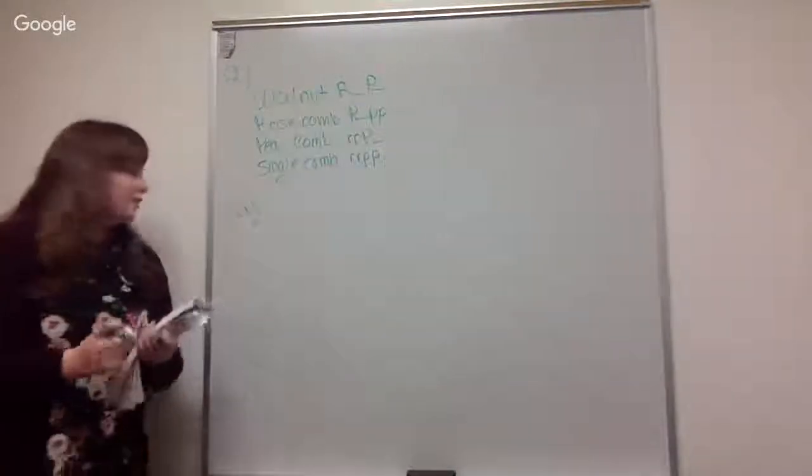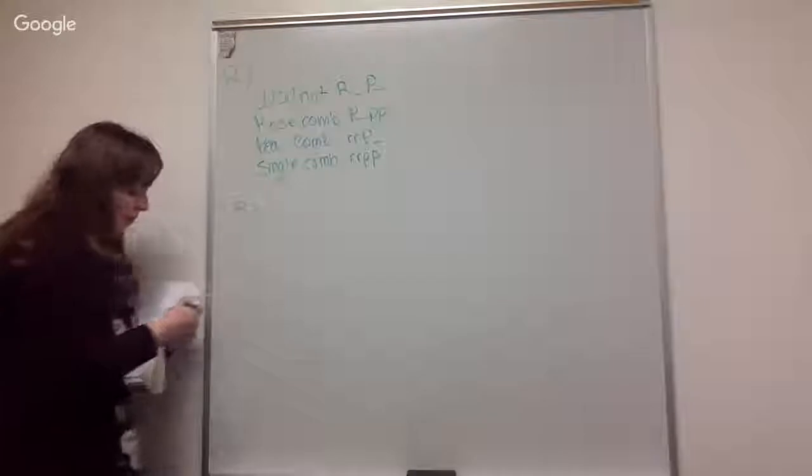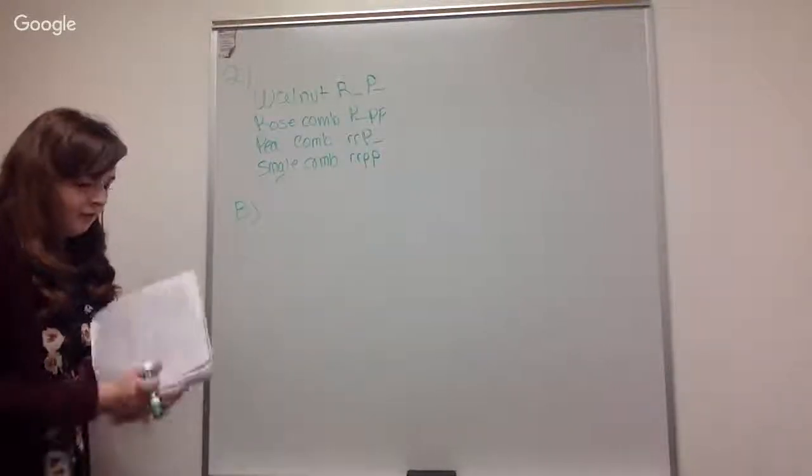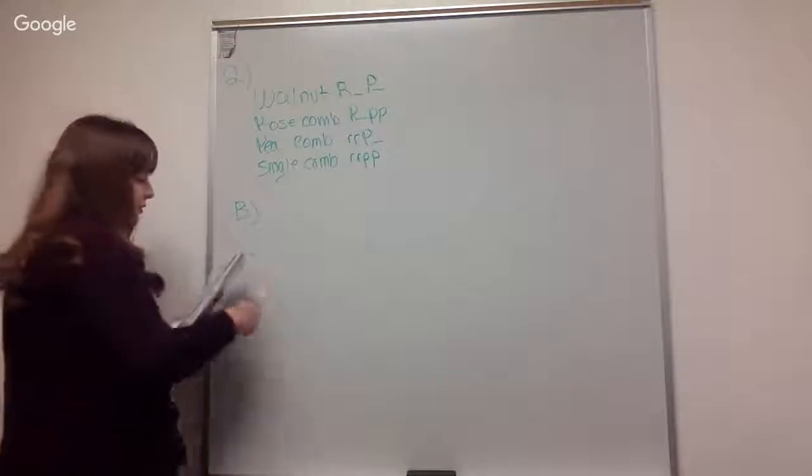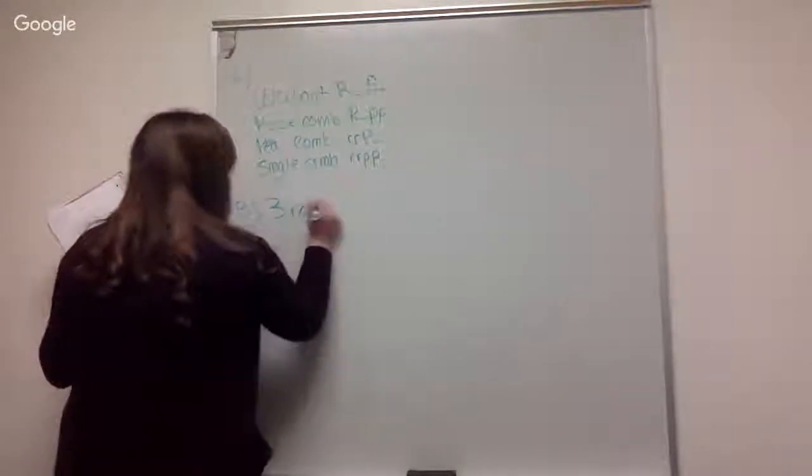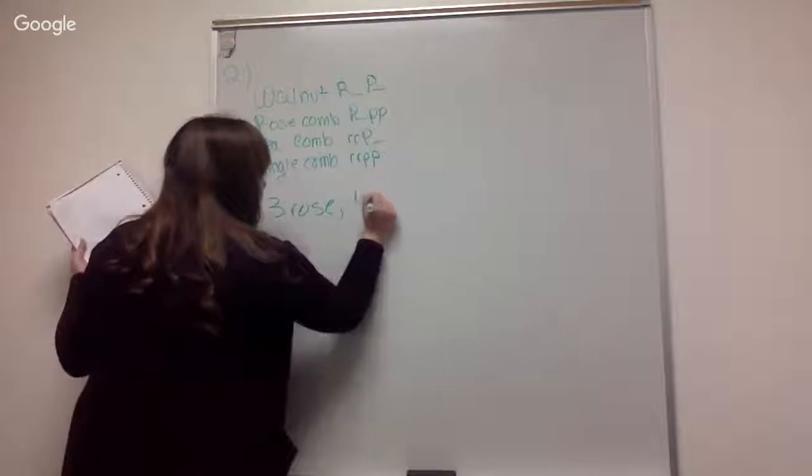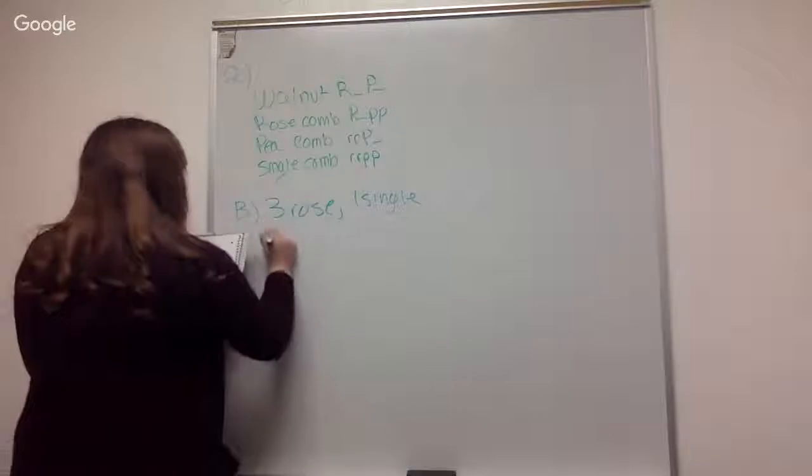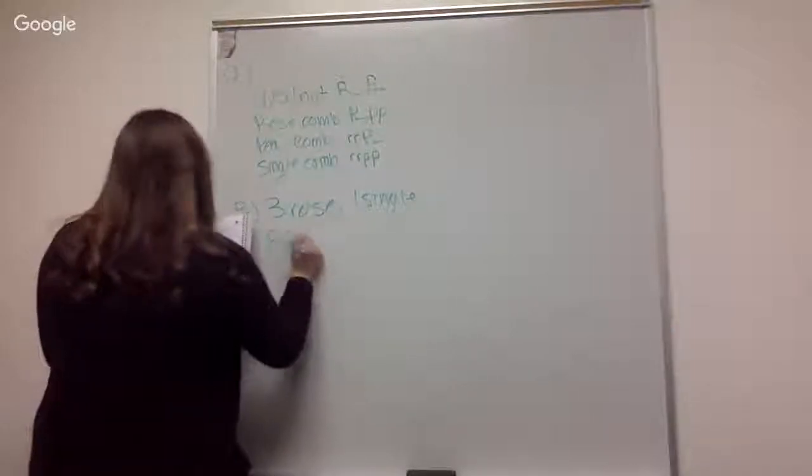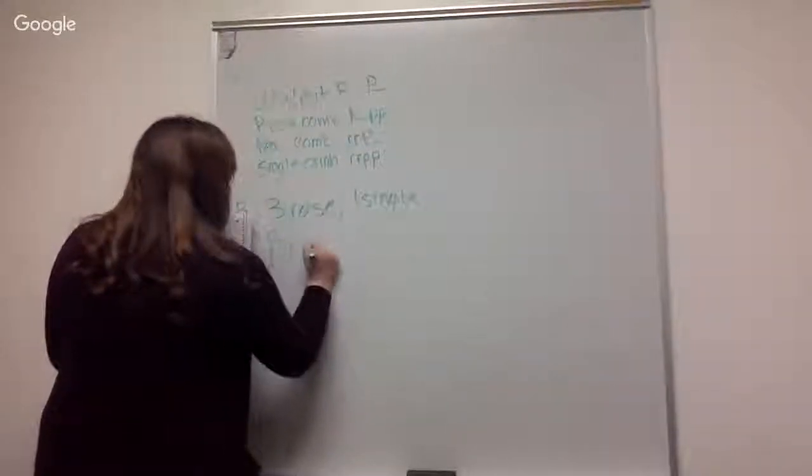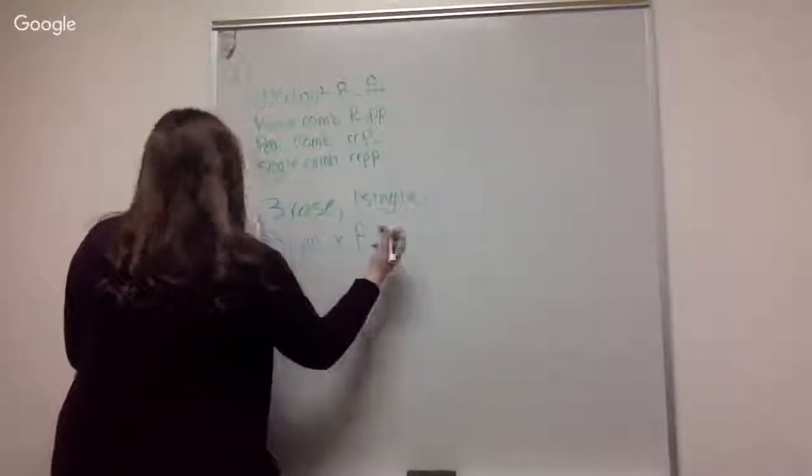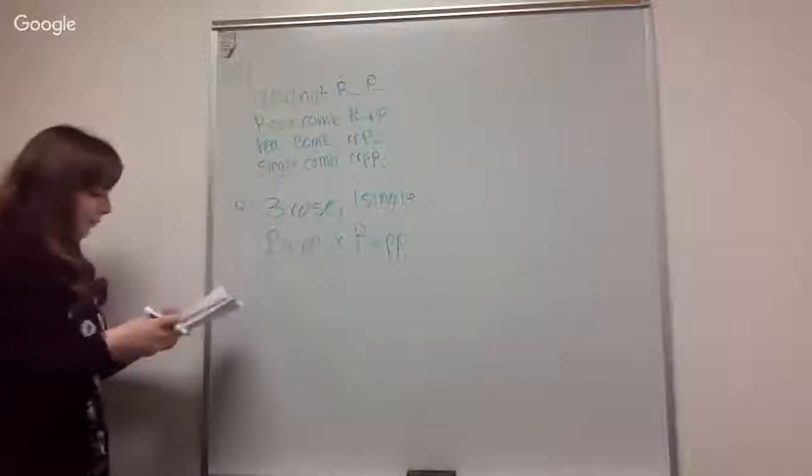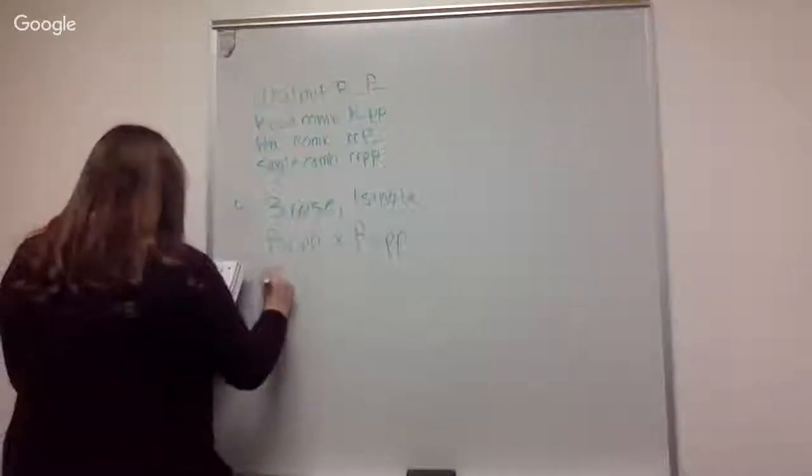And in part two or B of two you're looking for three rose combs and one single. And for that we got heterozygous R with recessive homozygous P's times heterozygous R, and to check we did a Punnett square.